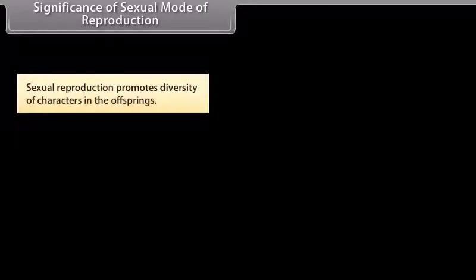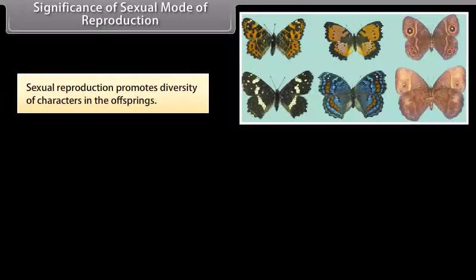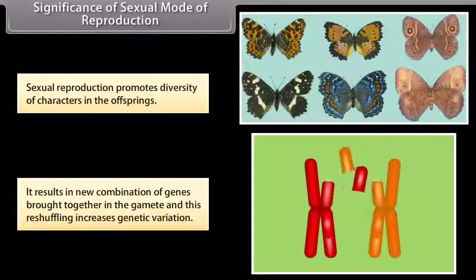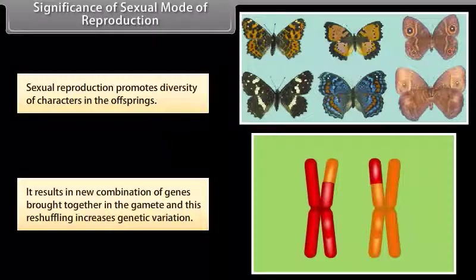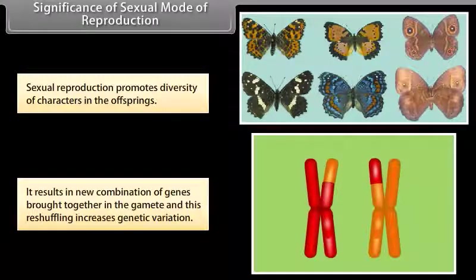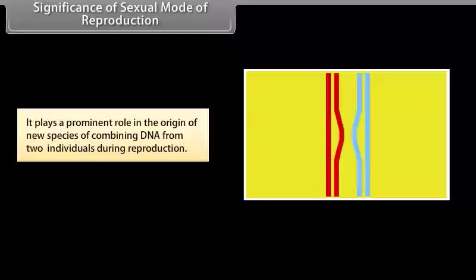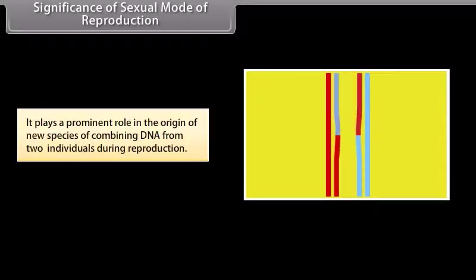Sexual reproduction promotes diversity of characters in the offsprings. It results in new combination of genes brought together in the gametes, and this reshuffling increases genetic variation. It plays a prominent role in the origin of new species by combining DNA from two individuals during reproduction.